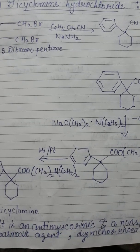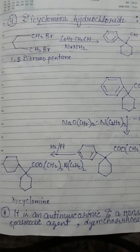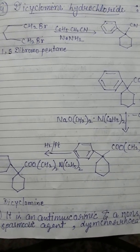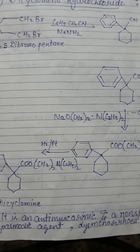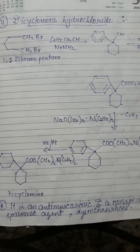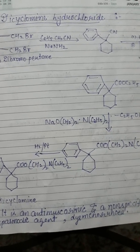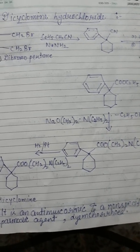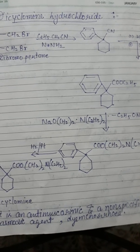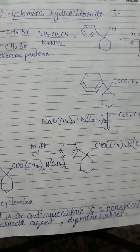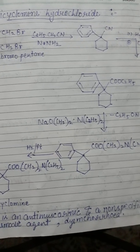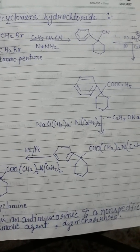Before the synthesis of both drugs, we should know about anticholinergic drugs. Anticholinergic drugs are also known as parasympatholytics or cholinergic blocking agents, which include atropine and related alkaloids obtained from plants such as Atropa belladonna, Scopolia carniolica, and Datura, as well as synthetic or semi-synthetic atropine substitutes.